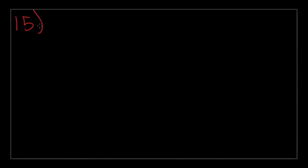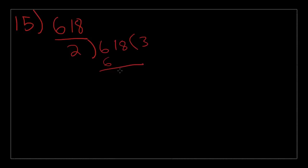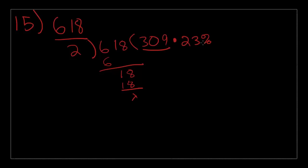Moving on to number 15: which of the following is equivalent to one-half of 23% of 618? Let's start with the easiest step — multiply half by 618, which is the same as dividing by 2. 618 divided by 2 equals 309. What we have left is to multiply by 23%, so the answer is 23% of 309. That is choice A.